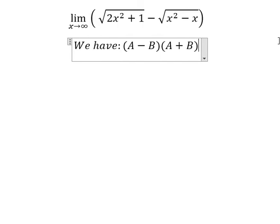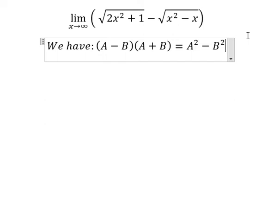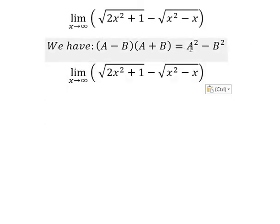We want to cancel the square root, so we need to have the power of two. To create the power of two, we need to multiply by A plus B, because this one is A minus B.